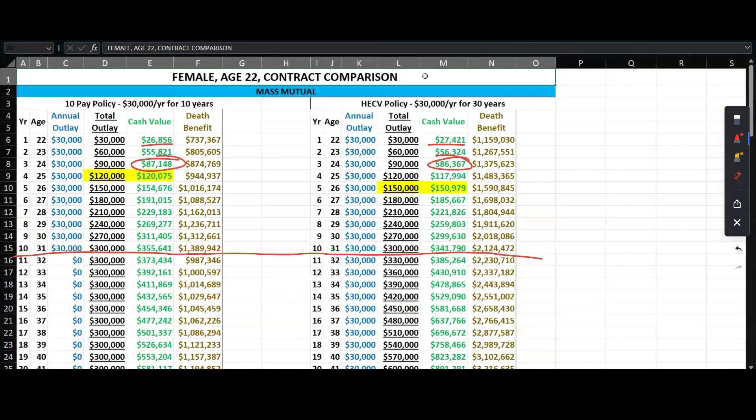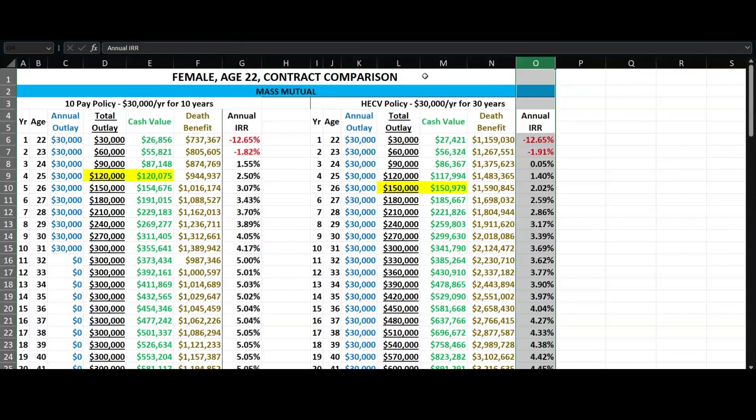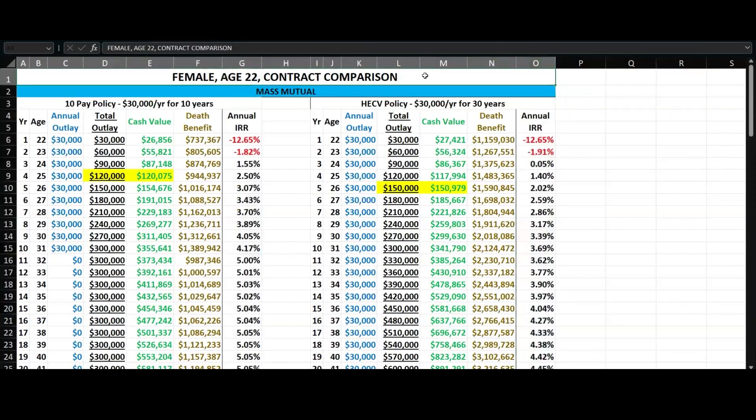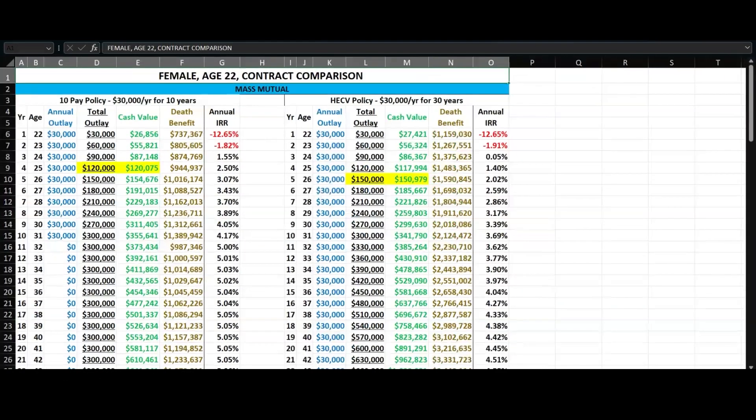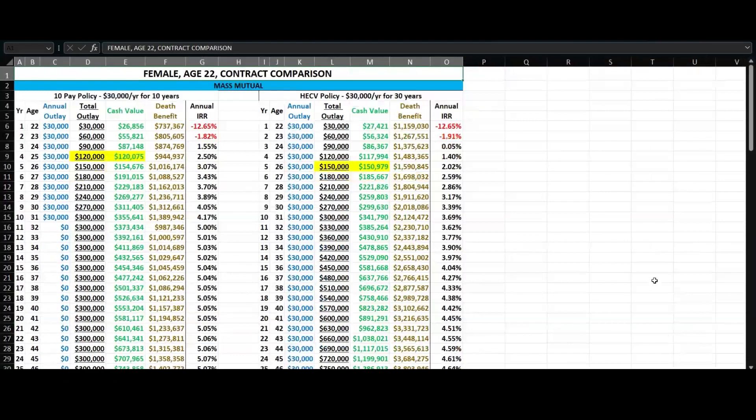If we just let them sit and grow, I'll see the 10 pay really start to pull ahead. However in this example I will have more money in the high early because I keep on pumping money into it. So it does depend on what she wants to do, what is her preference? Does she like the idea of funding for 10 years, or does she like the option to keep on adding to it? And this sometimes helps.